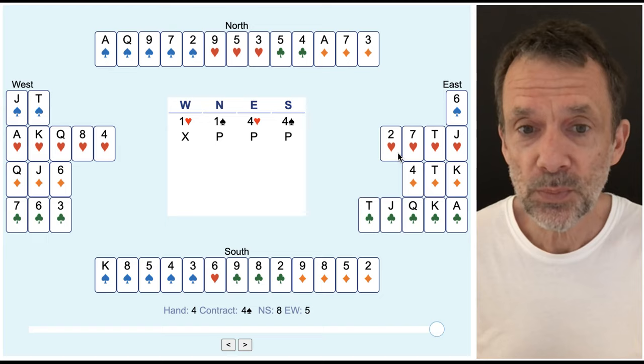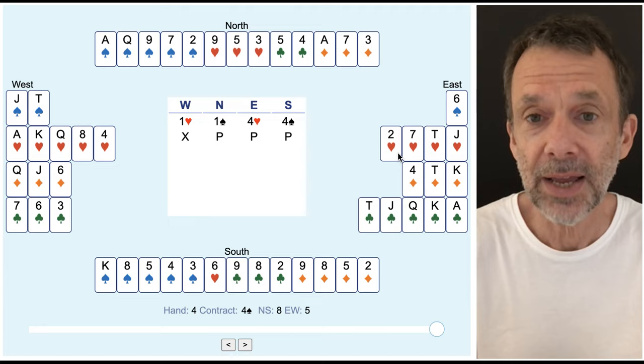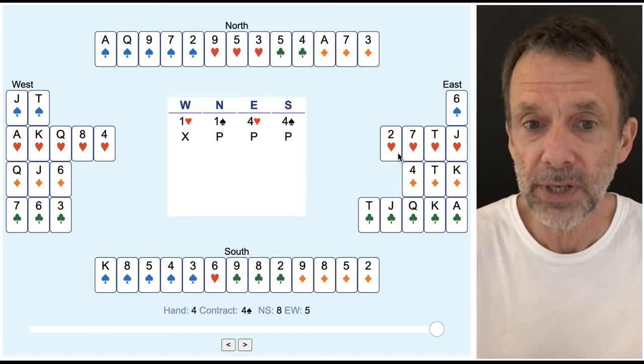Let's imagine that east and west were playing in four hearts. Now just have a look at the east-west cards and see if you can figure out how many tricks east and west would have made had we left them in their four heart contract.